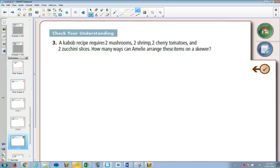So here we have a kebab recipe: two mushrooms, two shrimp, two cherry tomatoes, and two zucchini slices. The question for you is, how do you recognize that this is an identical objects question?